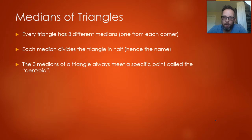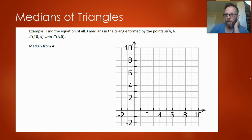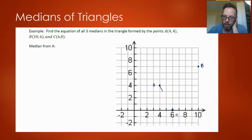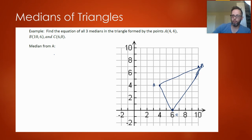To finish off this lesson and get some practice in, we have an example. A triangle is formed by the points A(4, 4), B(10, 6), and C(6, 0). I've given you a big grid to draw this triangle — you should be able to fit it on. If you printed this off, you might want to use a ruler. We're going to find the equation of all three medians.